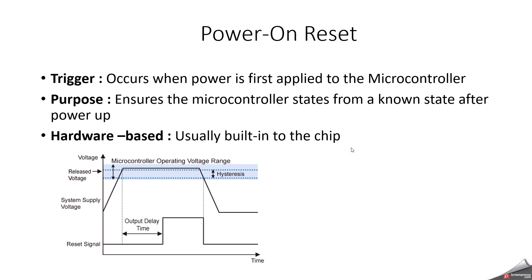The purpose of power on reset is to ensure the microcontroller starts from a known state after power up. The general reset sequence includes: clearing internal registers to their default values, setting the program counter to the address of the reset vector — which is the starting point of the program — and initiating the microcontroller's internal clock and other necessary hardware components. This is hardware-based and is usually built into the chip.